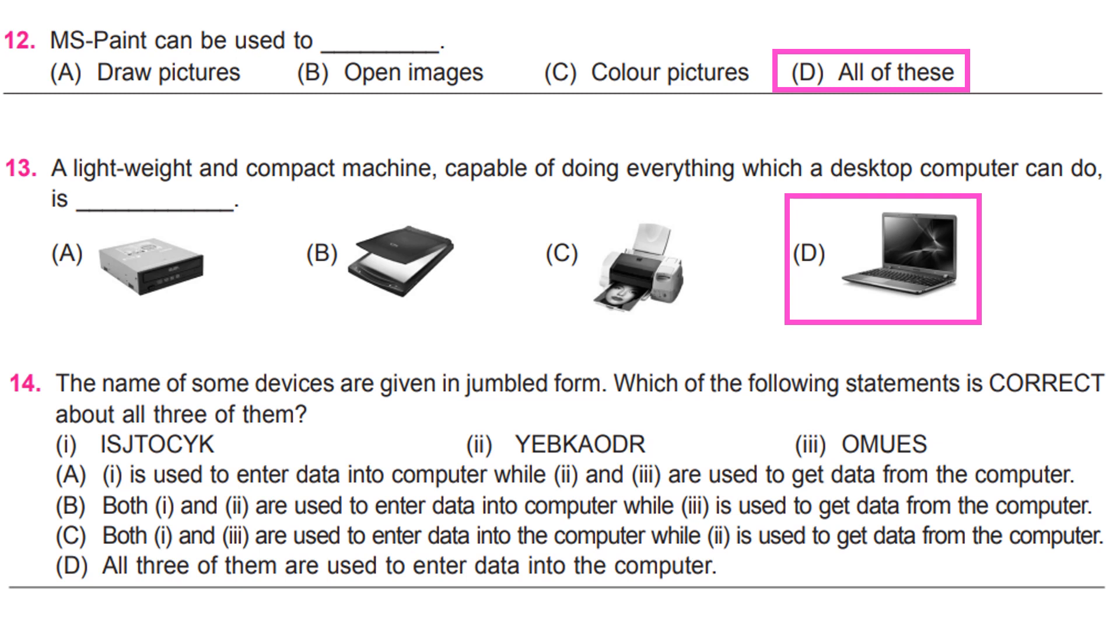The name of some devices are given in jumbled form. Which of the following statements is correct about all three of them? First let us unscramble the words. They are joystick, keyboard, and mouse. Now read the options. Answer is D. All three of them are used to enter data into the computer.